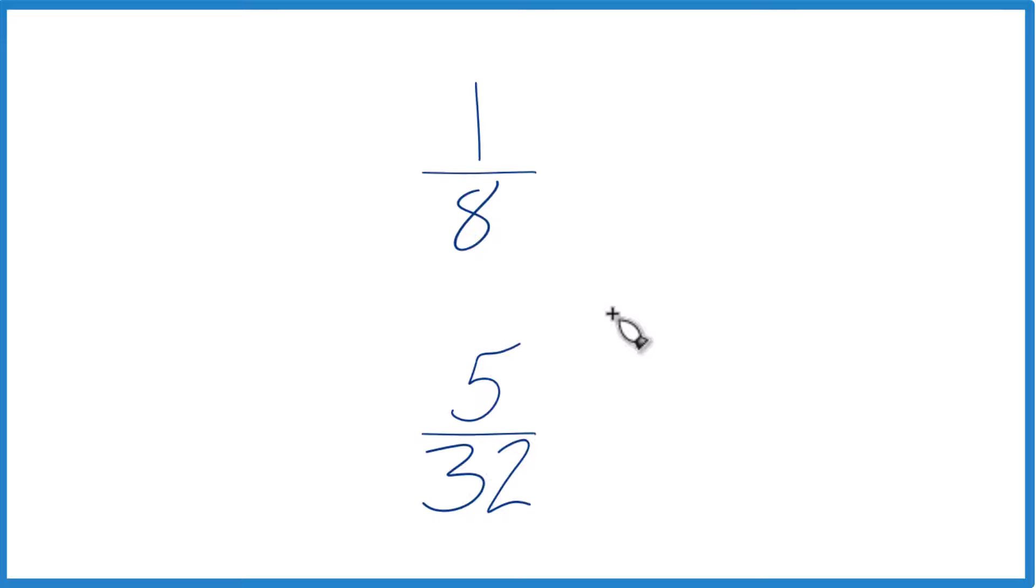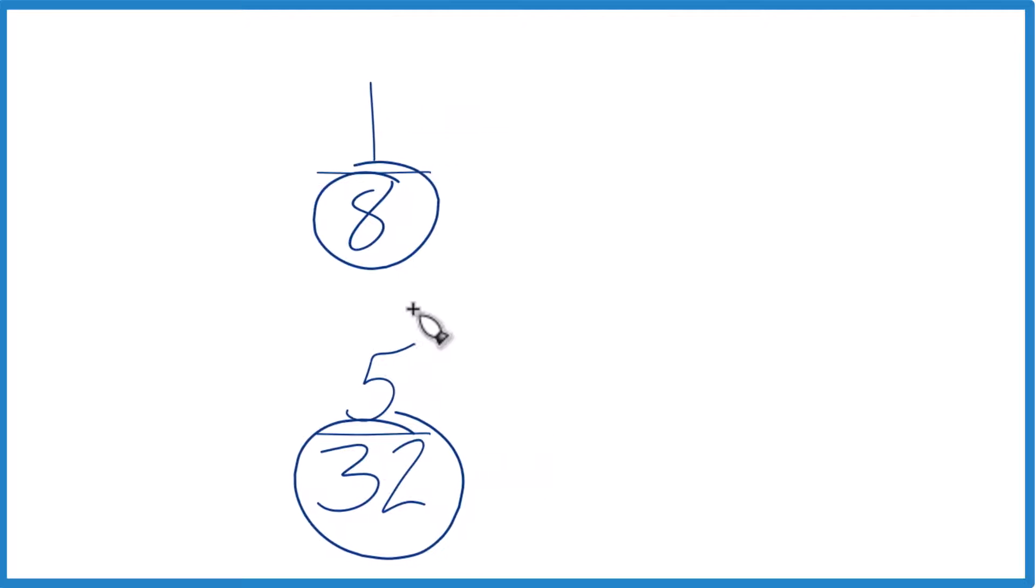The other thing you could do is find a common denominator. Right now we have 8 and 32, but if these were the same, we could just compare the numerators and we'd be done.